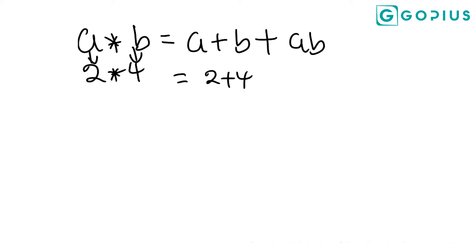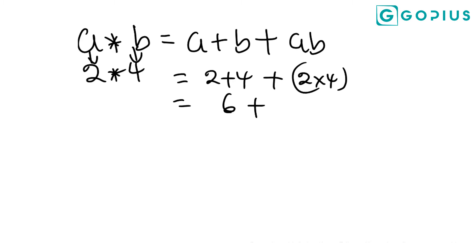So a+b now becomes 2+4, because a means 2 and b means 4. And a×b means 2×4. This equals 2+4 which gives us 6, plus 2×4 which gives us 8. So 2★4 equals 6+8, and 6+8 gives us 14. That is the value for 2★4 given the binary operation a★b defined as a+b+ab.